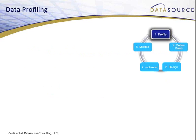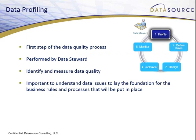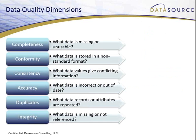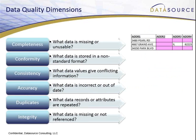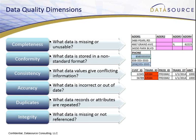Let's look at the first step of the data quality management process: data profiling. This is performed by the data steward, who will identify and measure data quality to look for data anomalies. They'll ask: how good — or bad — is the data right now? Can this data be used for other purposes? It's important to understand the issues and anomalies to lay the foundation for the business rules and processes that will be put in place. During profiling, there are six data quality dimensions that should be followed: completeness — what data is missing; conformity — what data is in a non-standard format; consistency — such as two transaction records with different customer IDs; accuracy — what values are valid; duplicates — which John Smith is the right one; and integrity — for example, a missing customer ID.